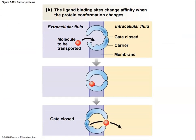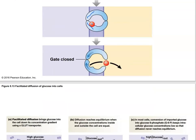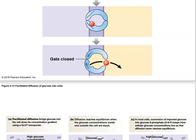Here's an example where a molecule needs to be transported — this red little sphere. It goes into the transporter and binds temporarily to a binding site right there. Then the transporter closes on one side and opens on the other.